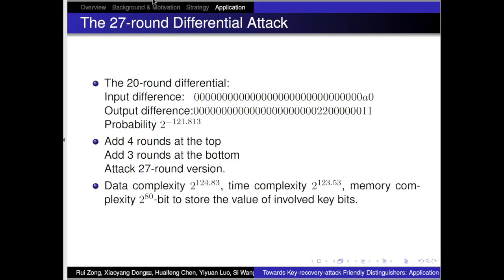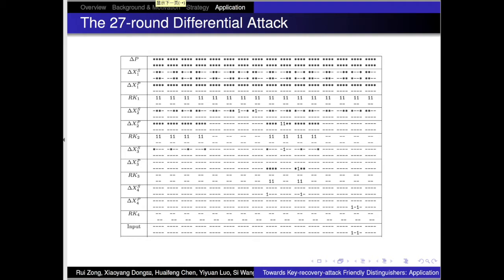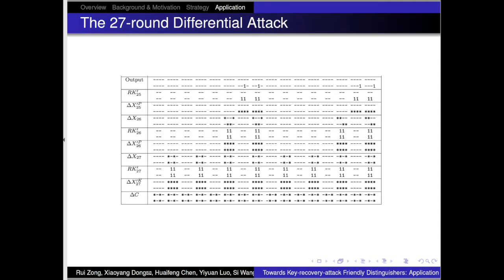We also present 21-round differentials with probability 2^{-114}. The 27-round attack has data complexity 2^{124.83}, time complexity 2^{123.53}, and memory complexity 2^{22.80} bits to store the values of involved key bits. The slides show the state of the 4 added round functions at the top and the details of the 3 added rounds at the bottom, along with the key bits involved during the attack procedure.